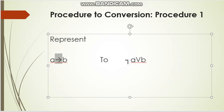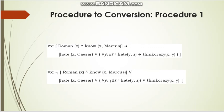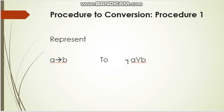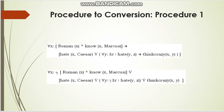Now we will apply this procedure to the given sentence. There are two implication signs. For the first one — Hit(y,z) implies ThinkCrazy(x,y) — we remove the implication sign and write a NOT sign before Hit. So we get: NOT Hit(y,z) OR ThinkCrazy(x,y).